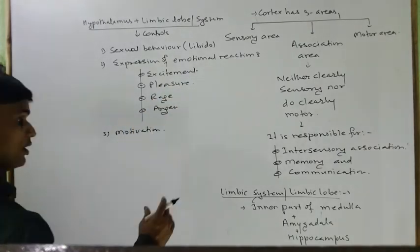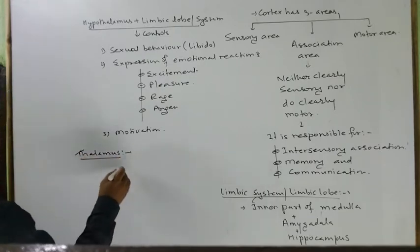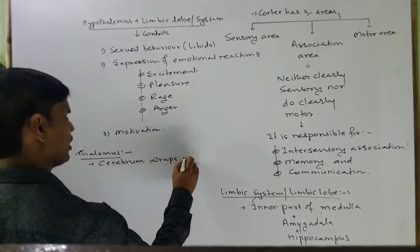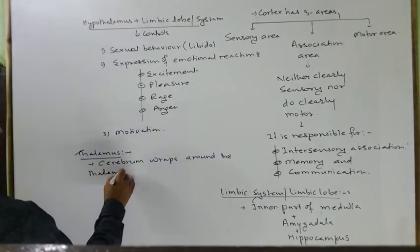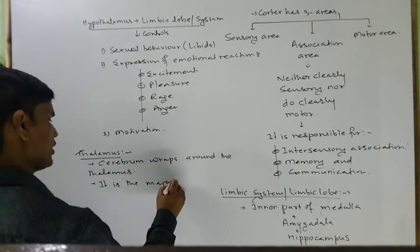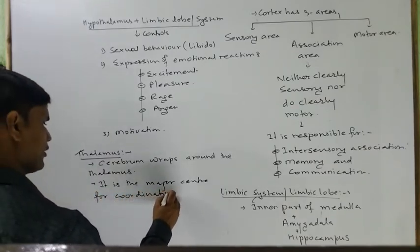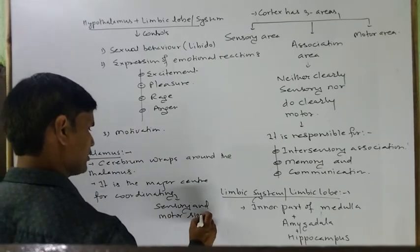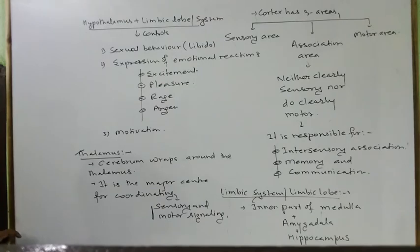अब जानते हैं Thalamus के बारे में। यह जो Thalamus है, यह Cerebrum से covered होगा — Cerebrum wraps around the Thalamus। यह the major center for coordinating sensory and motor signaling है, यानि Thalamus sensory और motor signaling के बीच coordination को establish करता है।